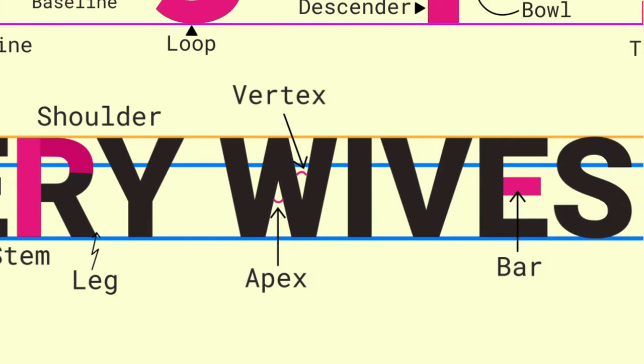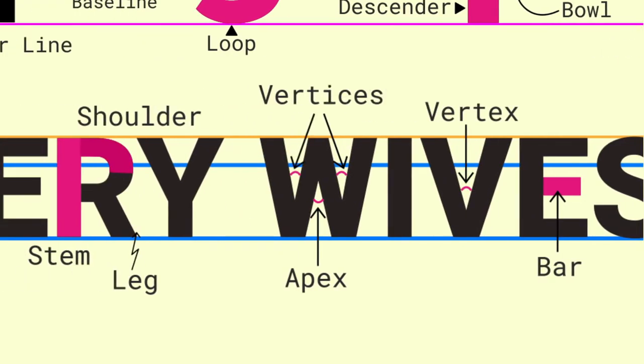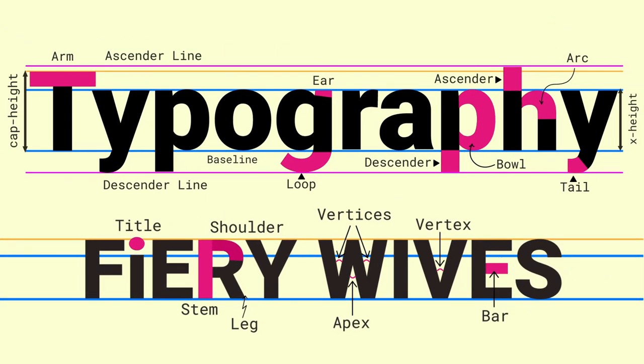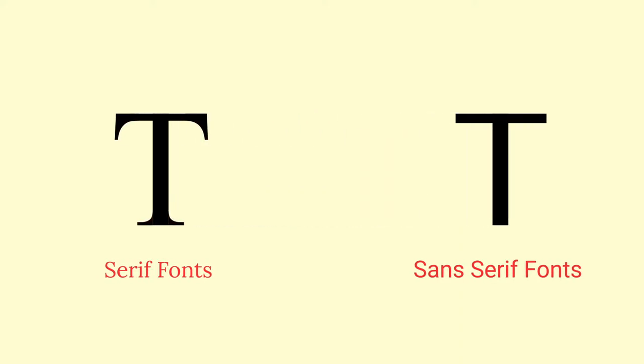Therefore the letter V has one vertex and the letter W has two vertices and one apex. Apart from the strokes, we also have some decorative edges at the terminals or ends of each stroke called a serif, which brings us to our next section: the types of fonts. Depending on whether the fonts have these edges on the terminal of their strokes or not, they are classified into two types, namely serif and sans-serif.